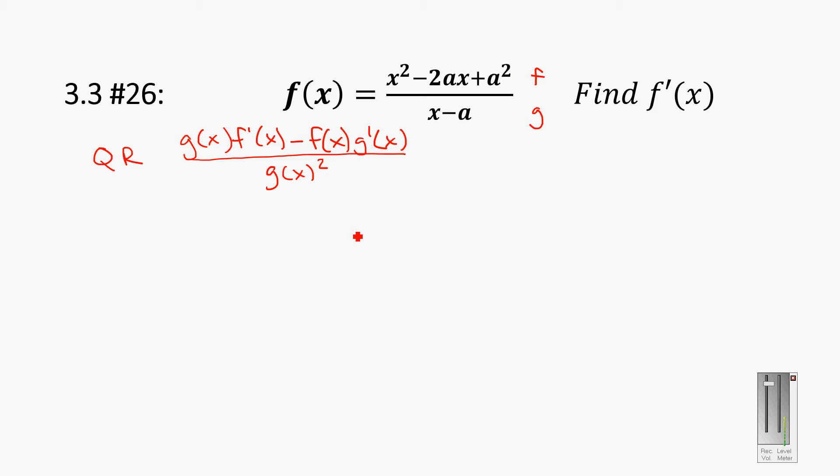So the first thing we need to do is we need to determine g of x. In this case, g of x is the bottom. So that's going to be g of x is x minus a times f prime of x. So we're taking the derivative of f of x with respect to x. Now, so something kind of interesting here is a squared just becomes a constant. So you can, you know, it's just a number squared is all it is. So in this case, I'm going to take the derivative of the top. This is f prime of x.